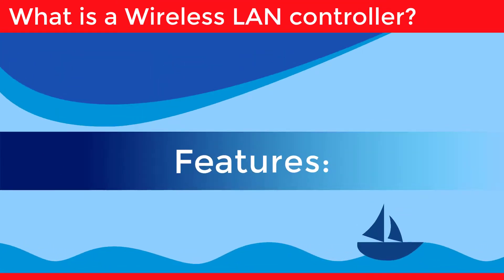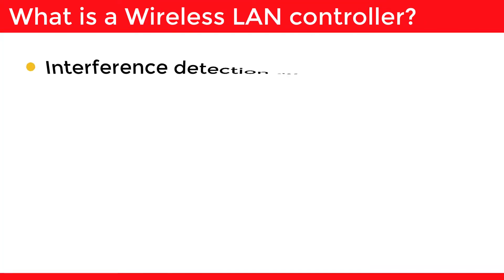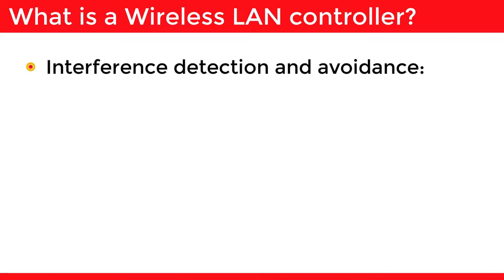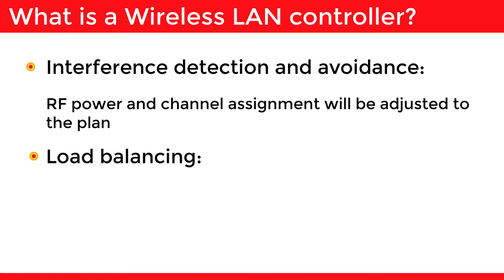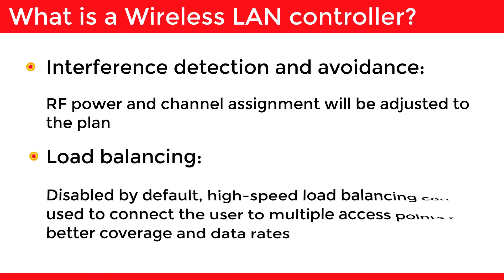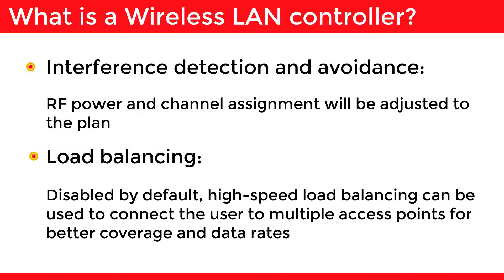Features. Interface Detection and Avoidance: RF power and channel assignment will be adjusted to the plan. Load Balancing: enabled by default, high-speed load balancing can be used to connect the user to multiple access points for better coverage and data rates.